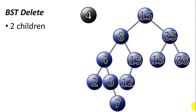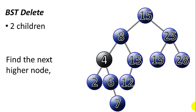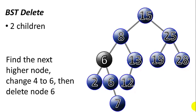In the last case, let's say we want to delete a node that has two children. In this case, node 4. So 4 has a left child and a right child. First, we're going to find the next higher node, which is 6. We change the 4 to a 6, and then we can delete node 6. And since the delete operation is done recursively, the 7 basically takes 6's place, and the 6 is gone.